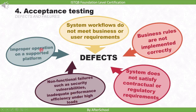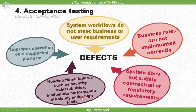The last acceptance testing defect is improper operation on a supported platform — the developed system is tested on the supported platform to check if it still works correctly. So these were the five examples of defects found during acceptance testing: system workflows not meeting business or user requirements, business rules not implemented correctly, system not satisfying contractual or regulatory requirements, non-functional failures such as security vulnerabilities or inadequate performance under high loads, and improper operation on a supported platform.